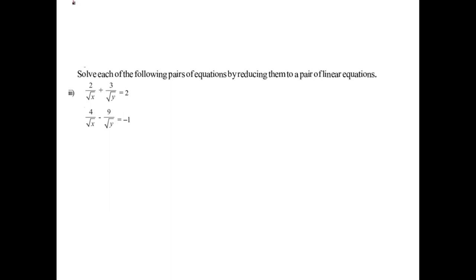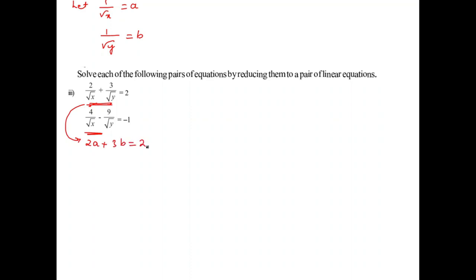For the next problem, I assume that 1 by root x equals A and 1 by root y equals B. The equations can be rewritten as: 2A plus 3B equals 2 (equation 1), and 4A minus 9B equals minus 1 (equation 2).